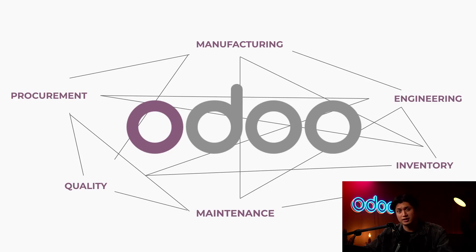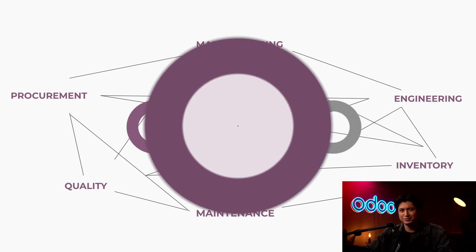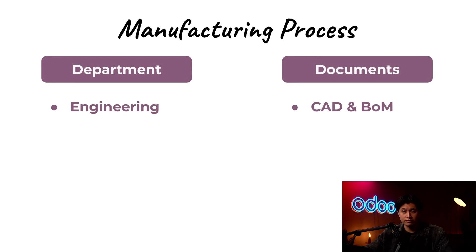Shipping connectors print labels and push tracking details straight to the customer. Because every step runs on the same real-time database, production planners see true stock levels, lines stay on schedule, and orders ship out without any surprises — showcasing the power of Odoo's all-in-one platform for manufacturing. So let's walk through the process.